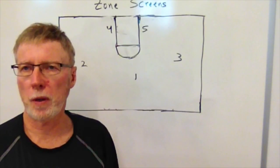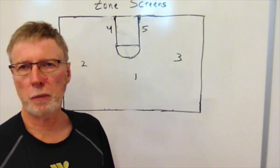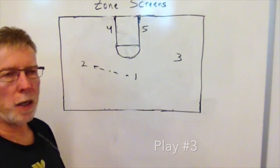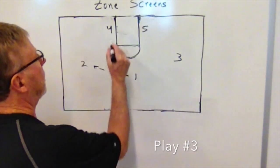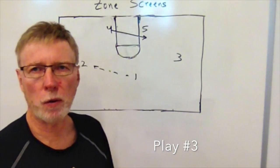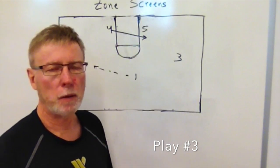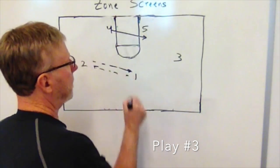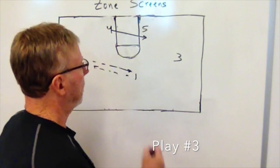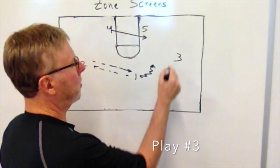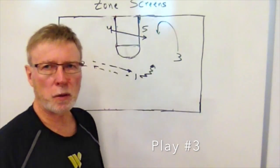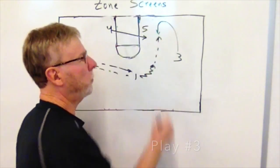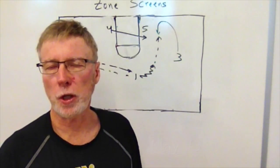Play number three ends with the three man taking the shot. We start again with the pass from the one man to the left side to the two man. The four man breaks over beside the five man to create the double screen on the low block. The two man passes back to the one, who begins a dribble while the three man goes to the baseline looking for the pass and the shot.